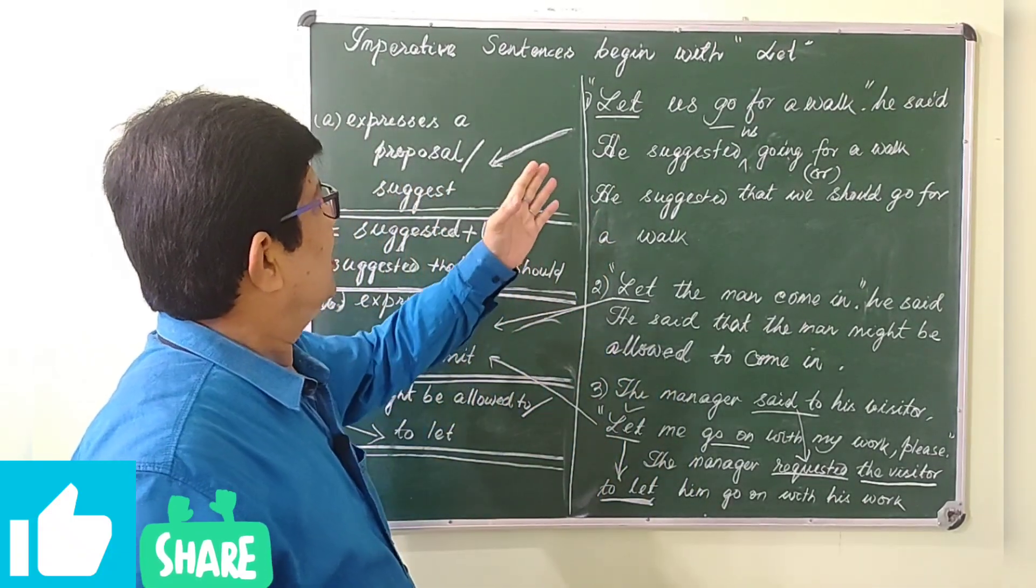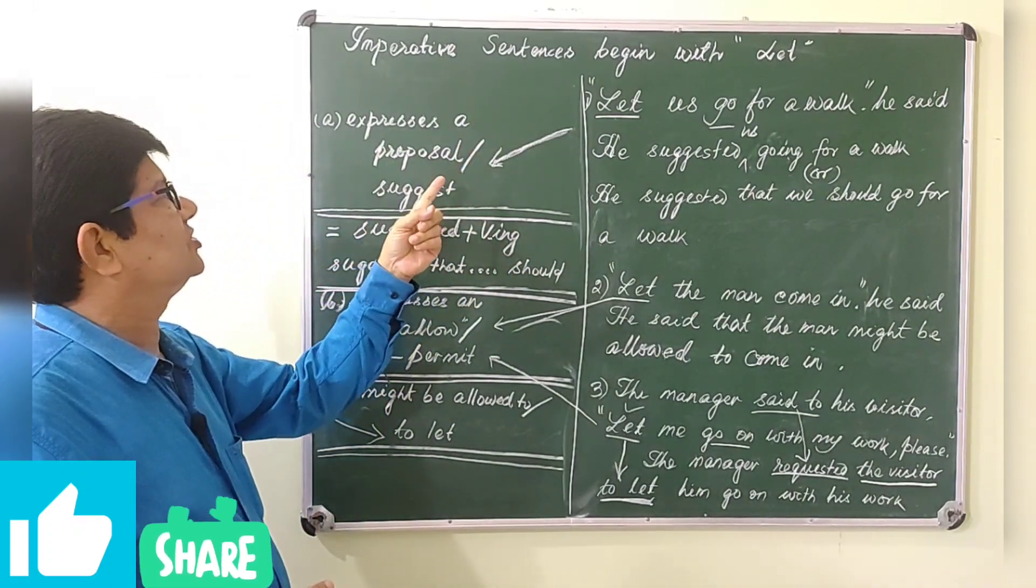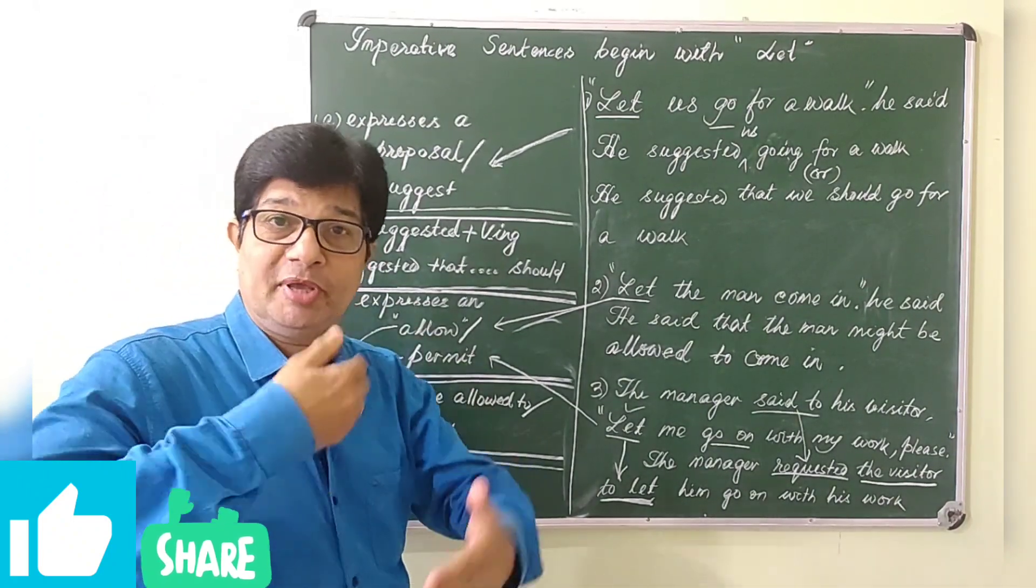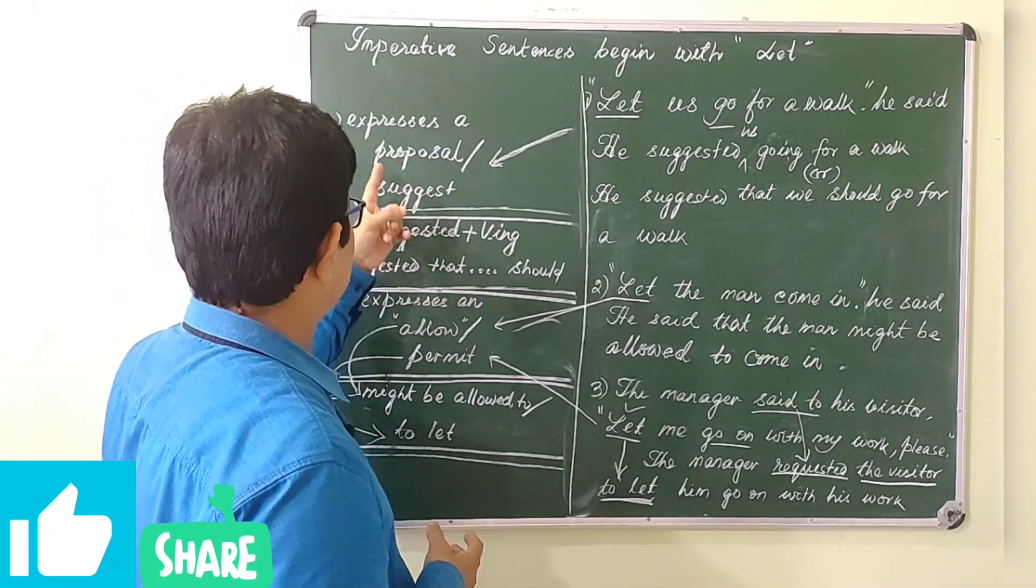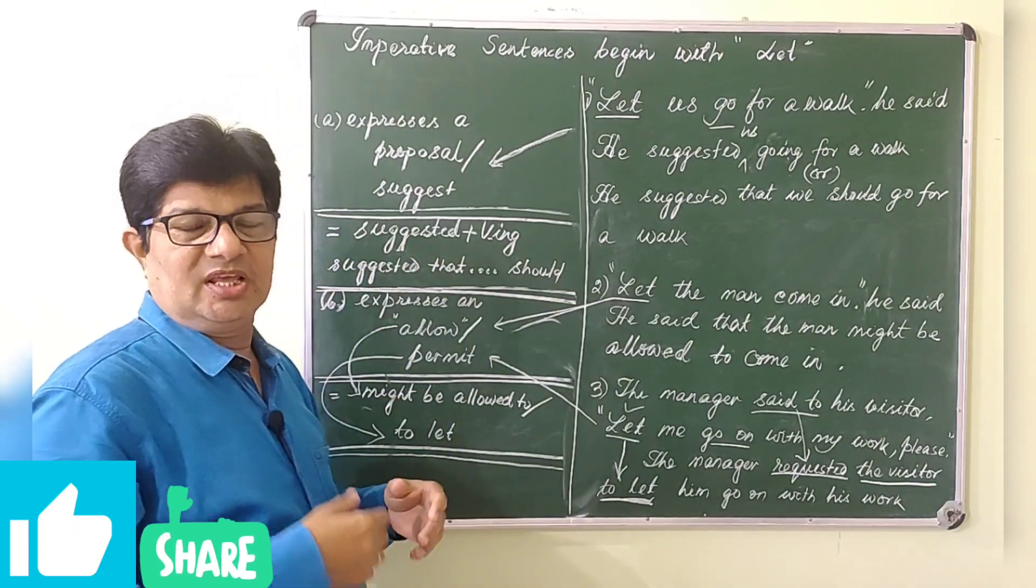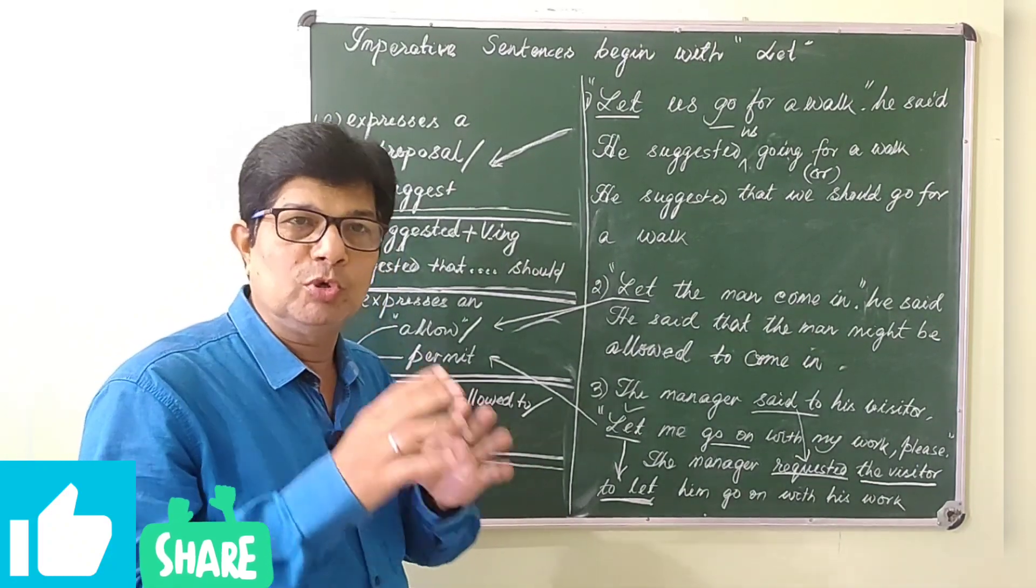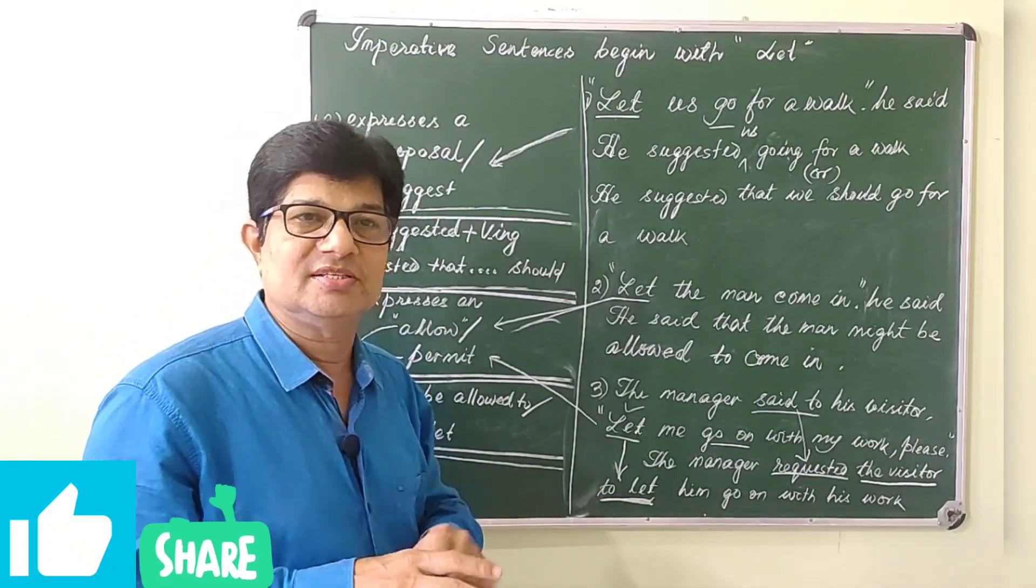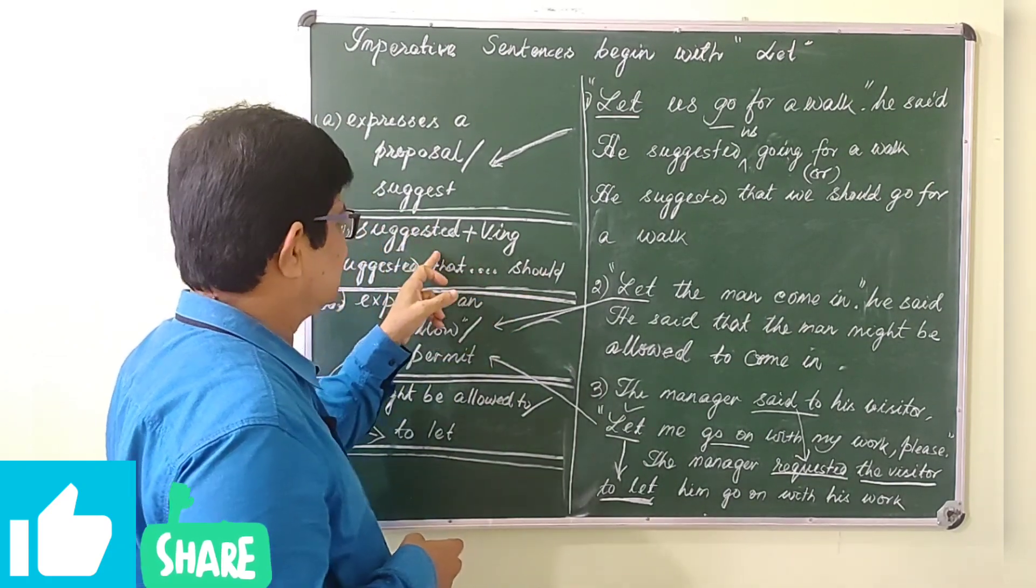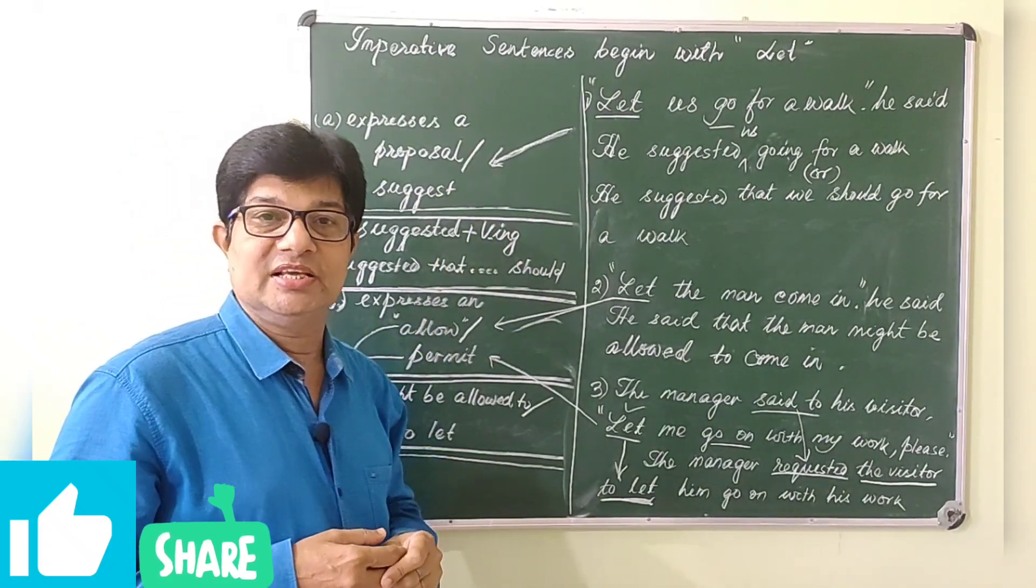Suppose let expresses a proposal or suggestion. What would it be in indirect narration? If you feel that let expresses a proposition, proposal, or suggestion, then you change the reporting verb into suggested plus the infinitive verb that is given in the reported speech.